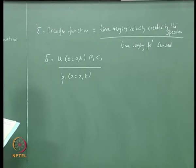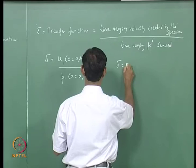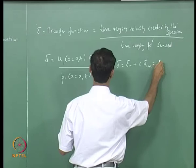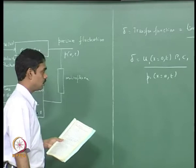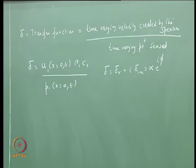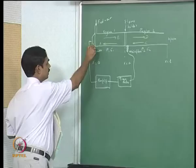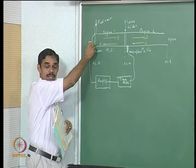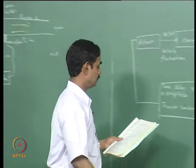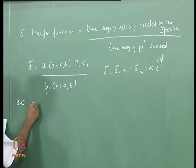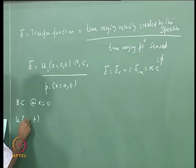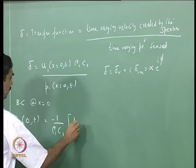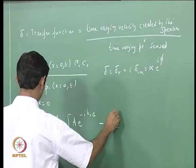Delta is a complex quantity. The crux of the matrix is that the boundary condition at x equal to 0 is now different. This boundary condition is no longer closed - it is a relationship involving some other velocity. We look at BC at x equal to 0: U(0,t) equals minus 1 over rho_1 C_1 times [A e^{-ik_1 a} minus B e^{ik_1 a}] times e^{i omega t}.